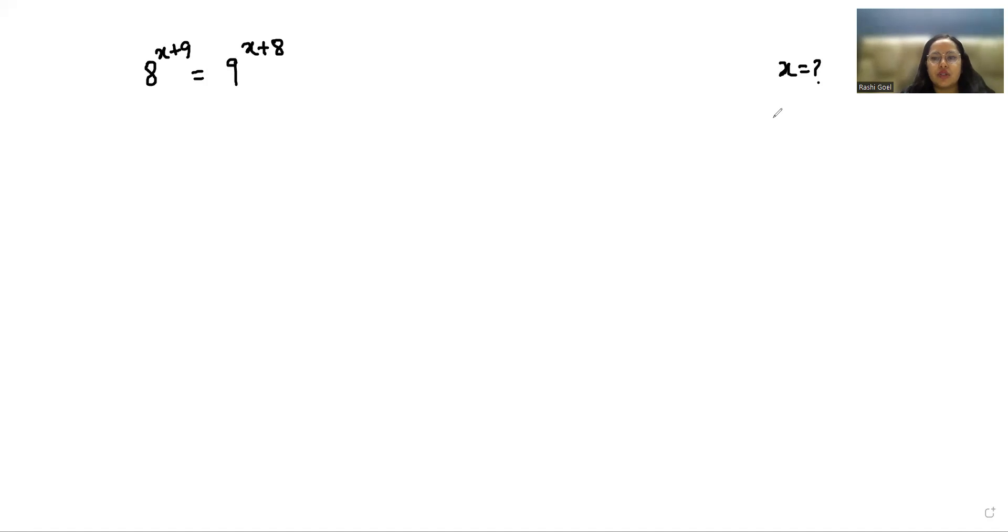Let's start with today's video solution. According to the exponent rule x power m plus n, we can write it as x power m times x power n. So here we can write 8 power x times 8 power 9.